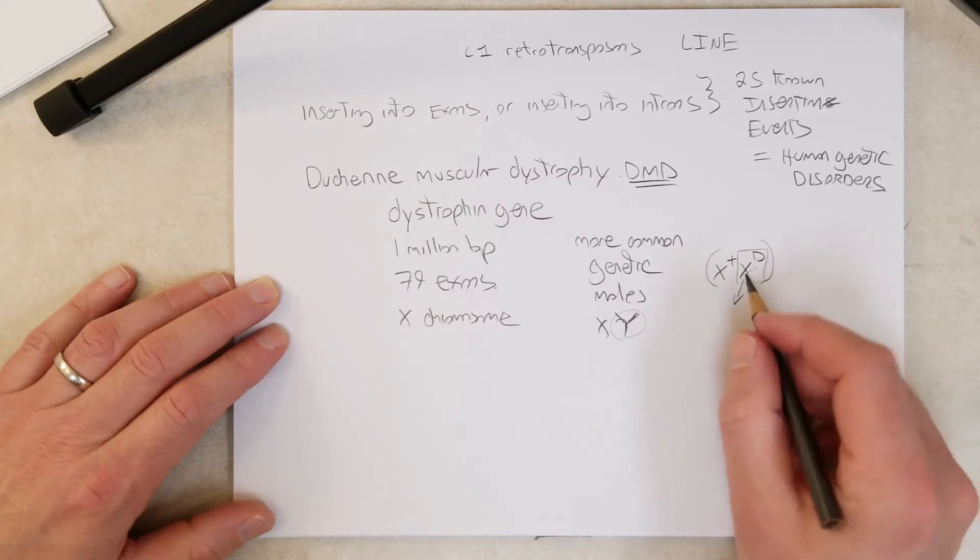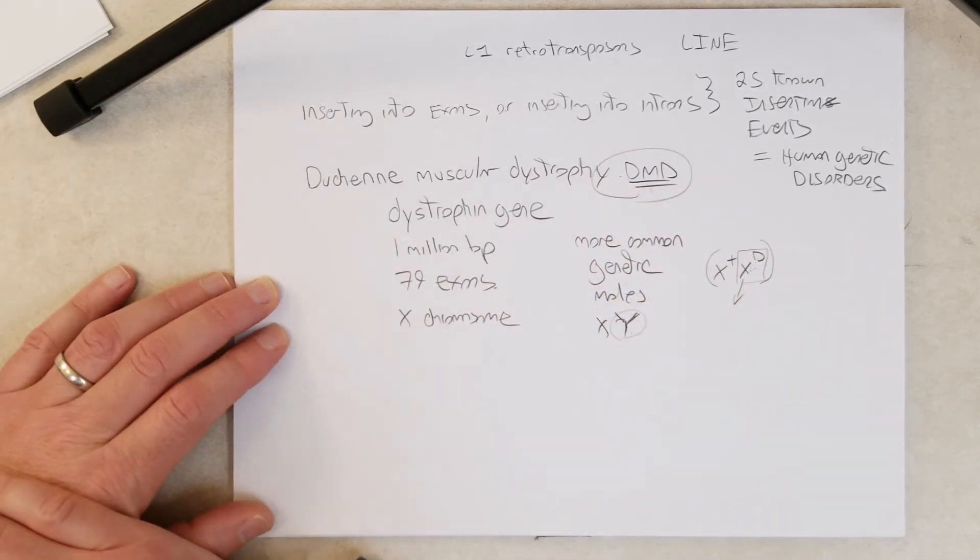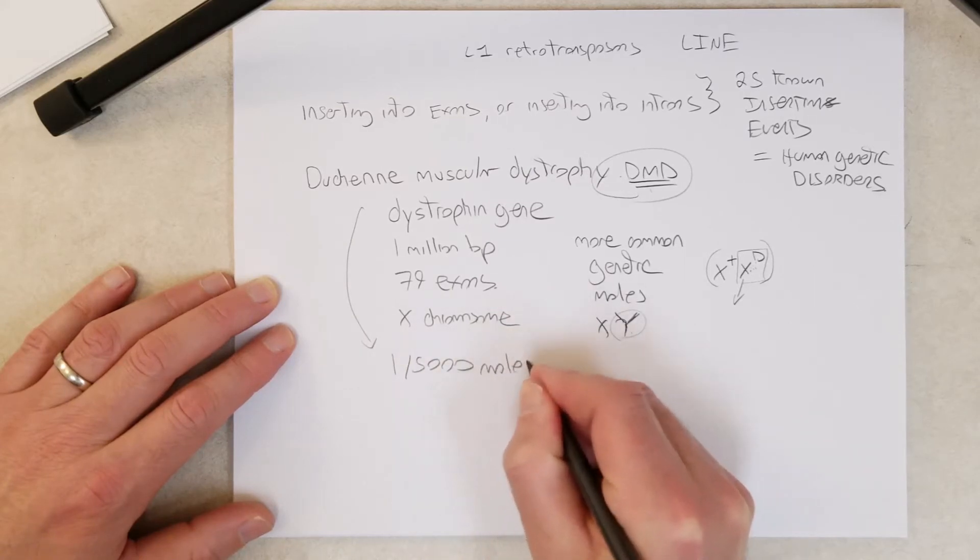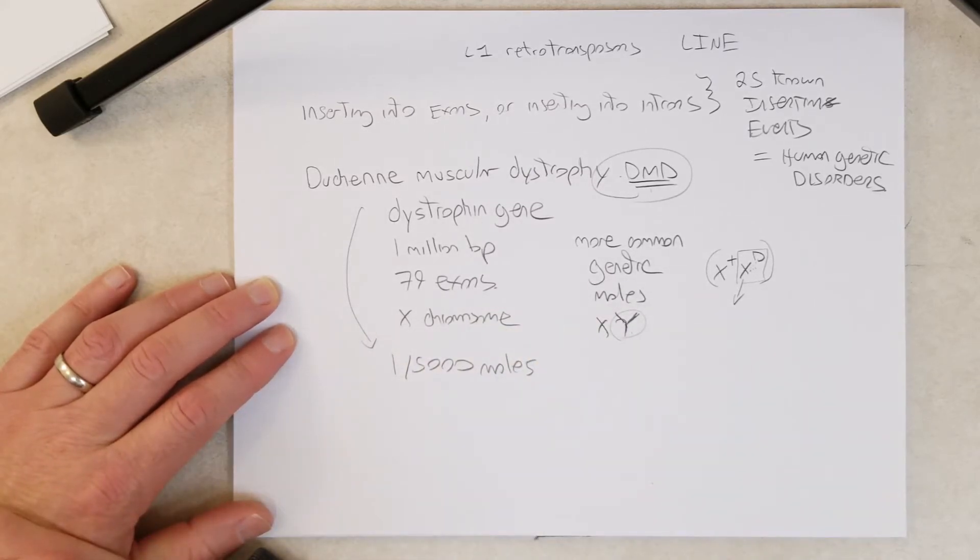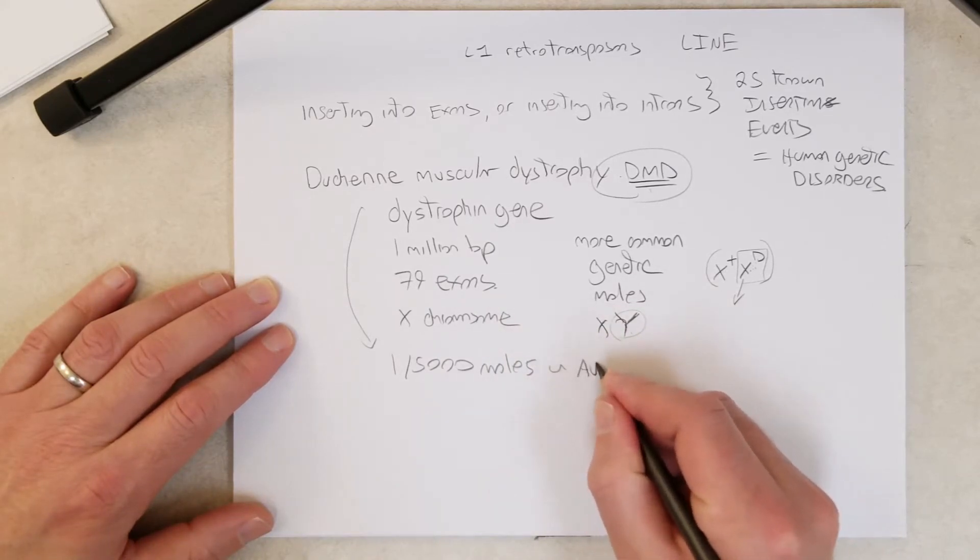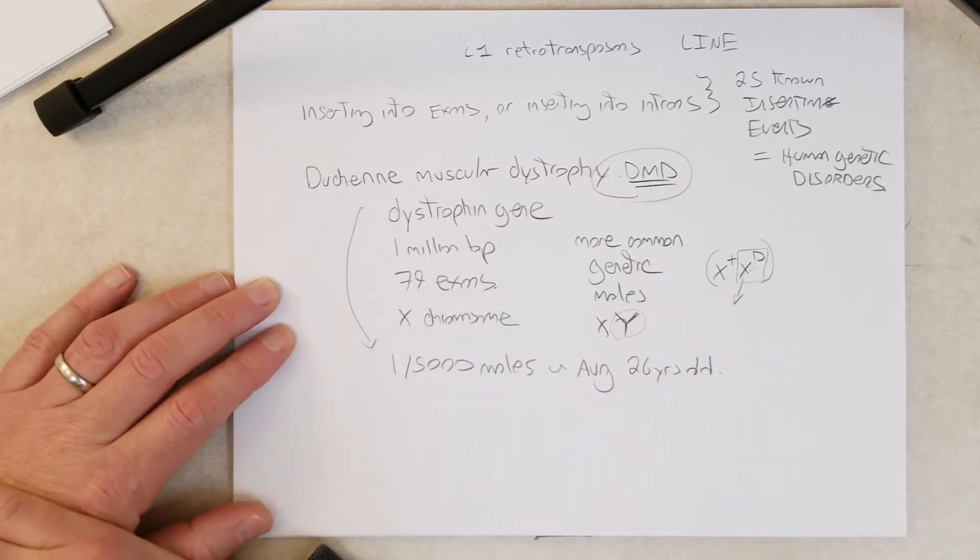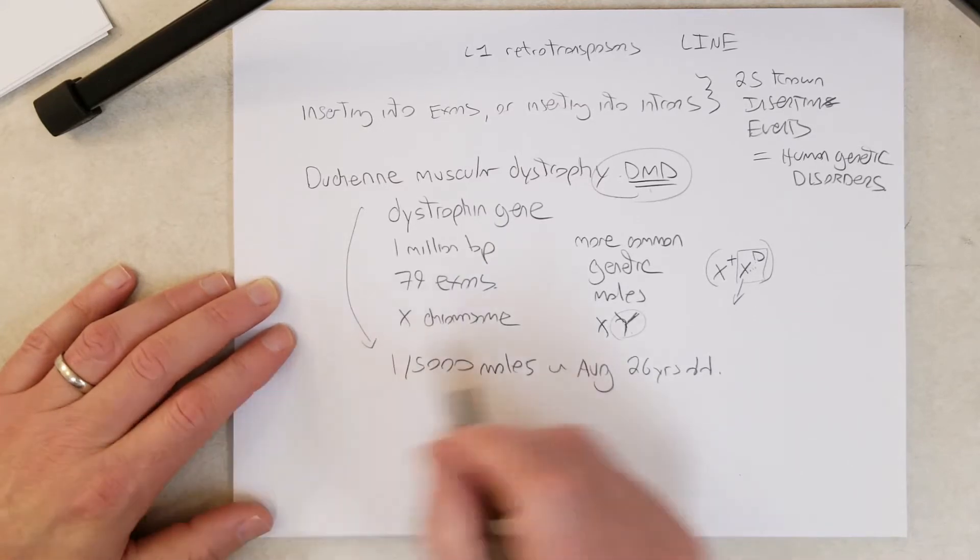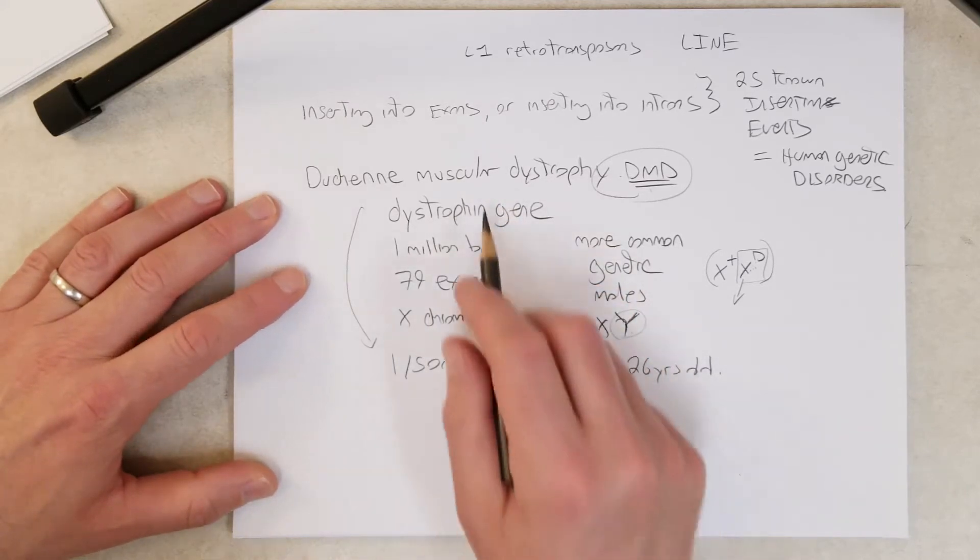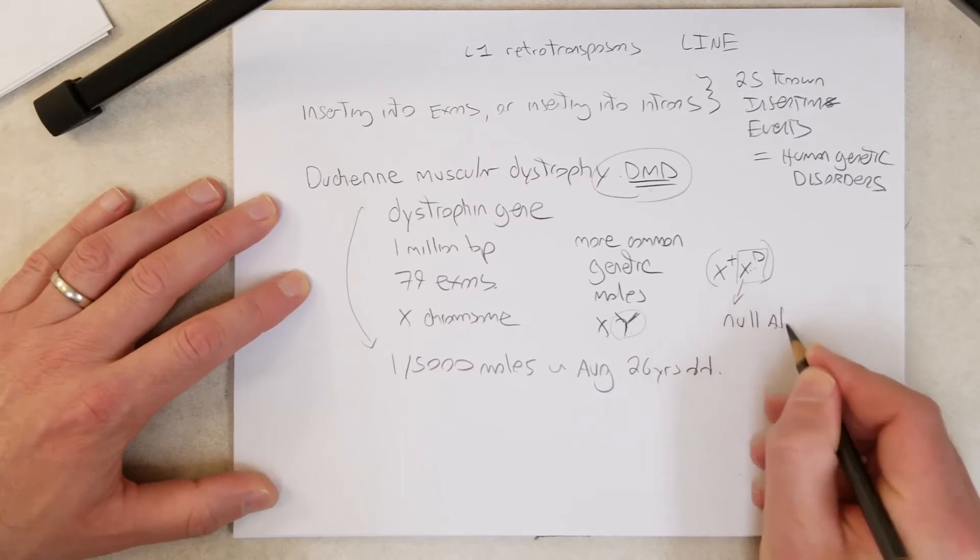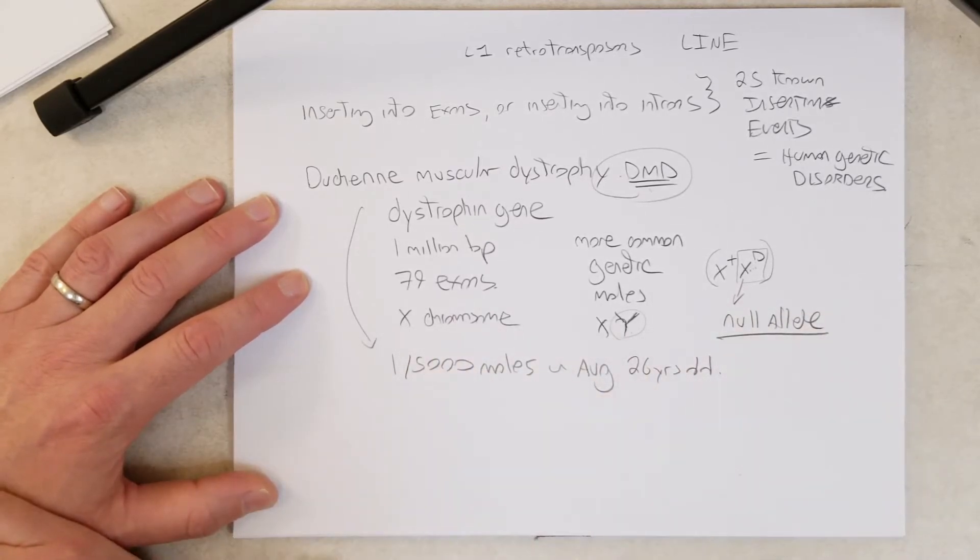So if this is a null allele, then DMD develops, Duchenne muscular dystrophy develops. It has an incidence or a frequency of one in 5,000 males. And it's a pretty terrible disease. The average lifespan is 26 years old. Essentially, it's muscle degeneration. The disease involves muscle degeneration. It's a terrible disease and usually results when the male inherits a null allele for the dystrophin gene from his mother.